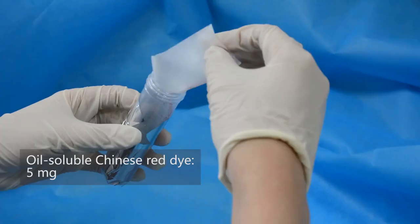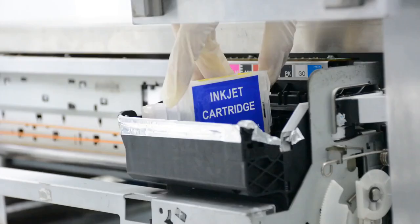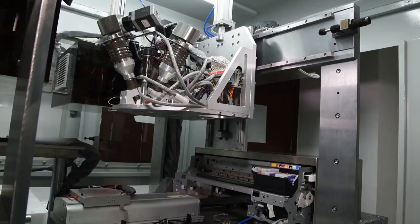Material preparation for polyjet printing. Add material, sonicate. Add Chinese red dye. Load them into the cartridges.